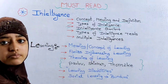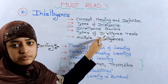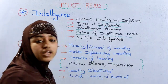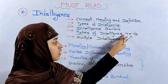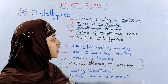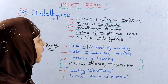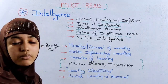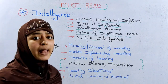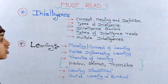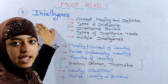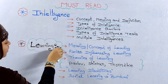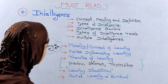Intelligence is very important. We have to choose an intelligence test, a rational intelligence test, and a Raven's intelligence test. There is also multiple intelligence. These are all used at the educational level — the intelligence chapter covers all these topics. Next is learning, which is very important.